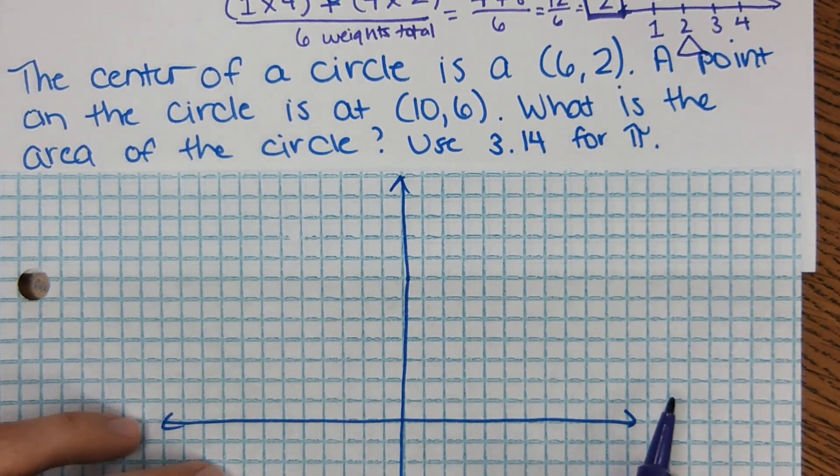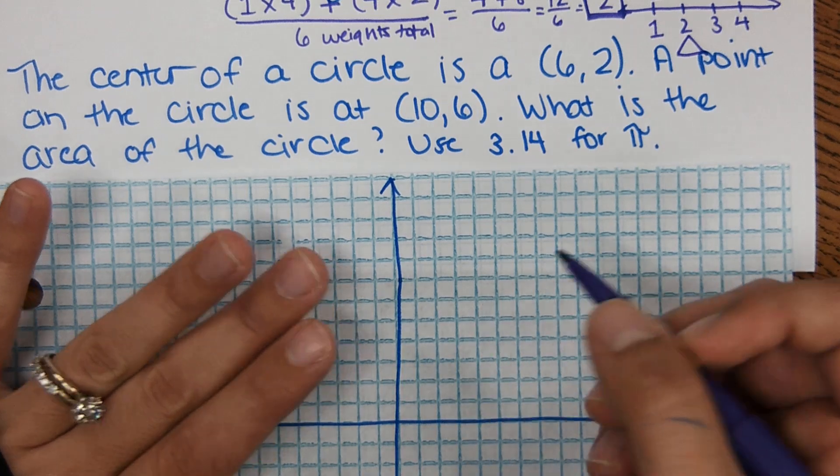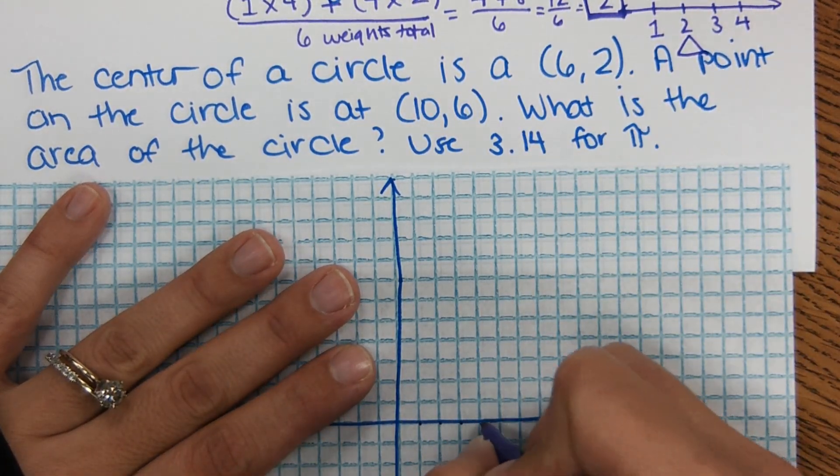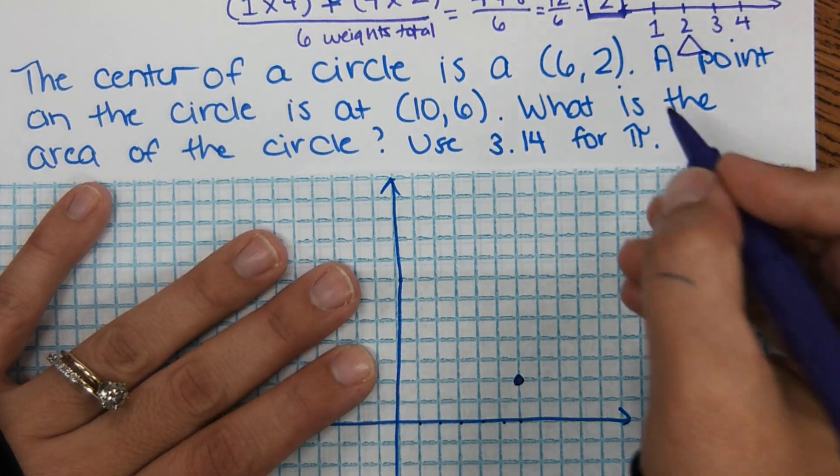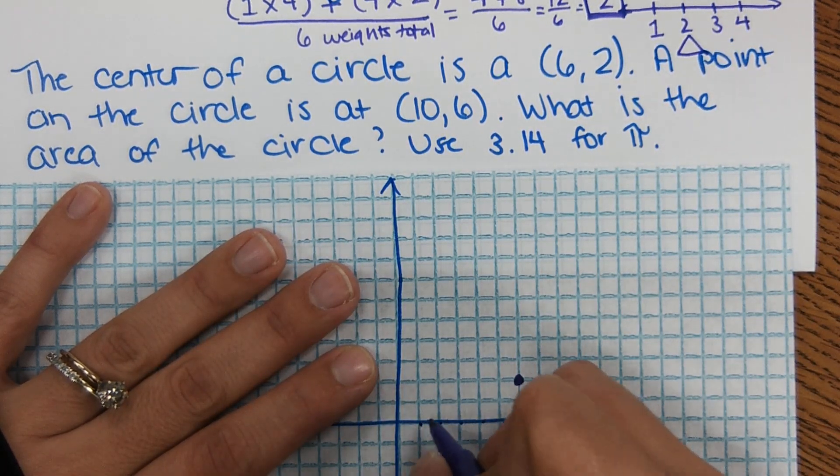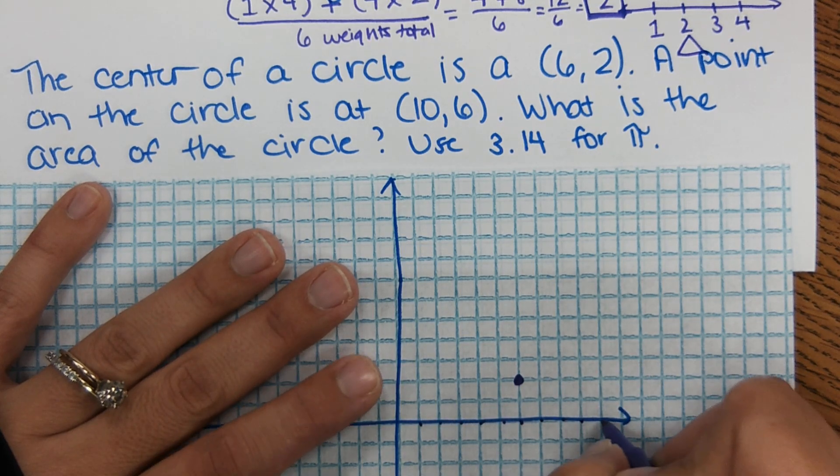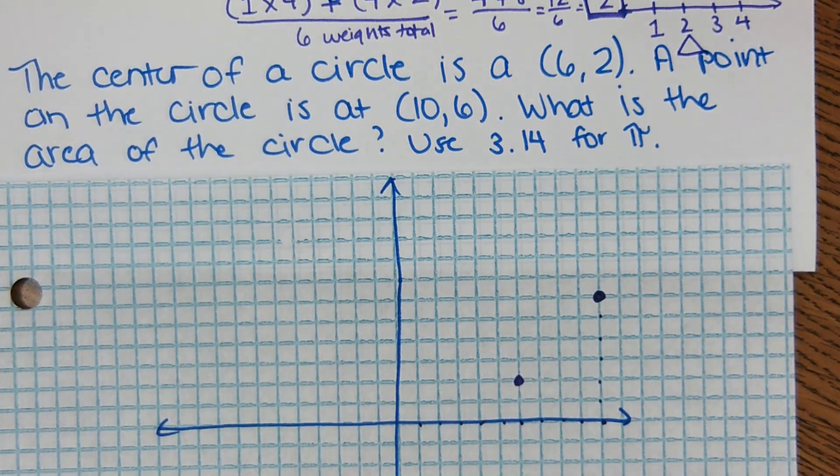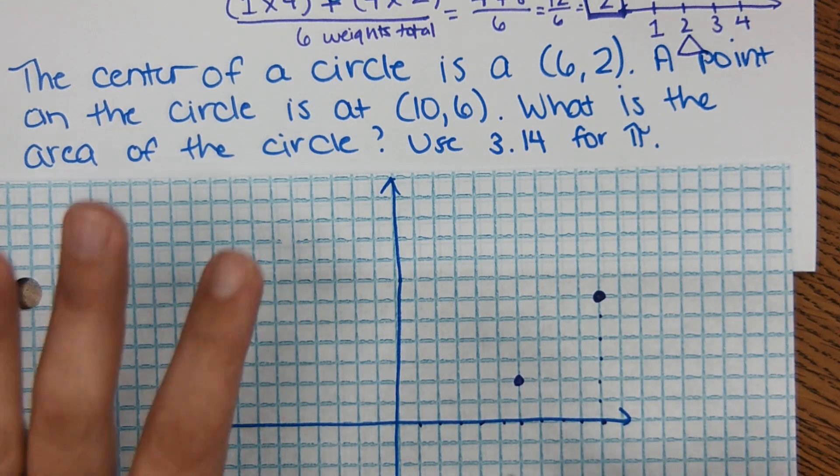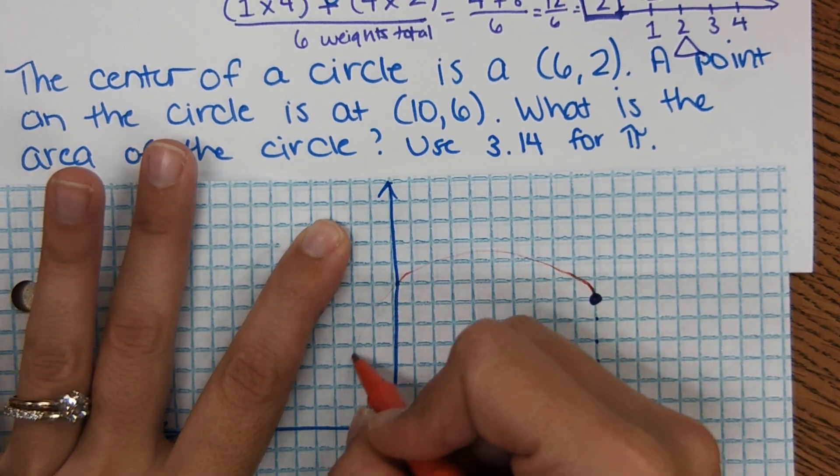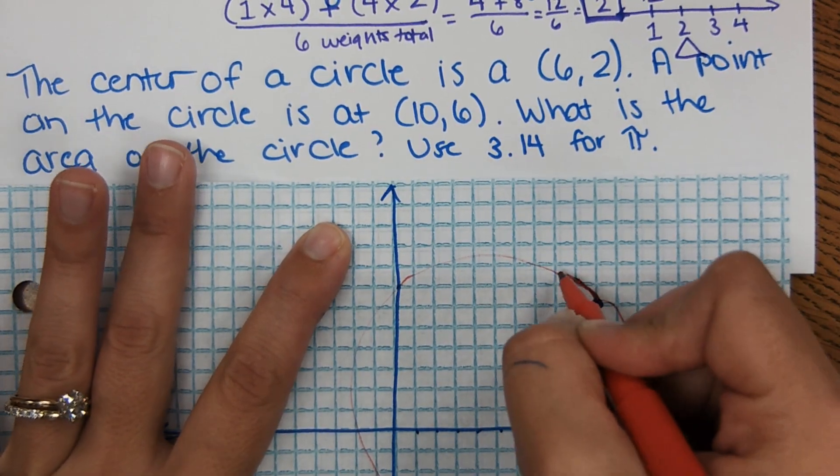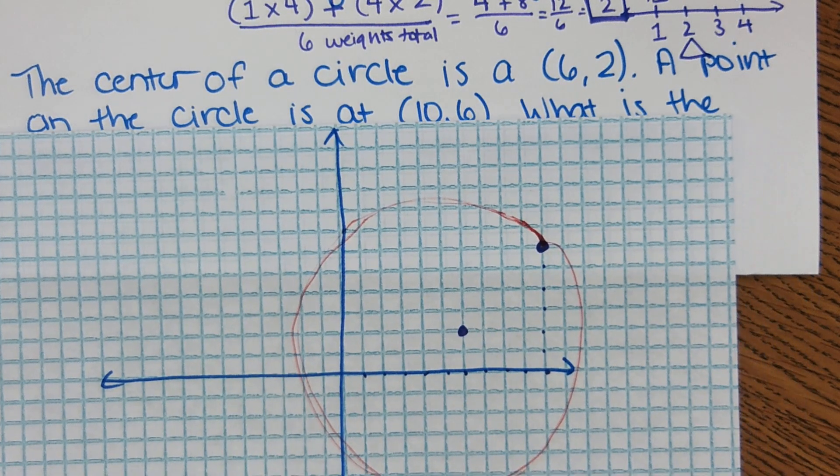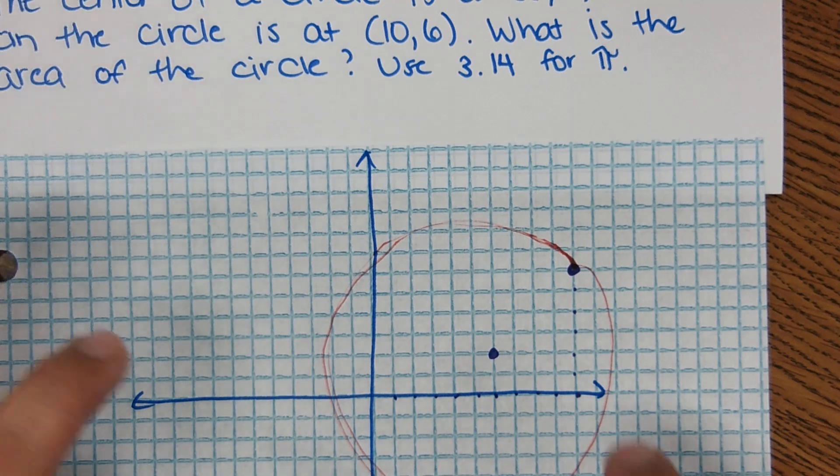First one would be graph the points, so I drew a coordinate plane on just my scratch paper. I'm going to graph the center of the circle, which is at (6,2), one, two, three, four, five, six, two, that's the center. And a point on the circle is at (10,6), so I'm going to graph that as well, three, four, five, six, seven, eight, nine, ten, one, two, three, four, five, six. Okay, so it says this is the center, this is on the outside, so imagine like a circle, obviously mine's not perfect, but it actually doesn't have to be drawn perfect. Draw the circle, center, and point on the circle.